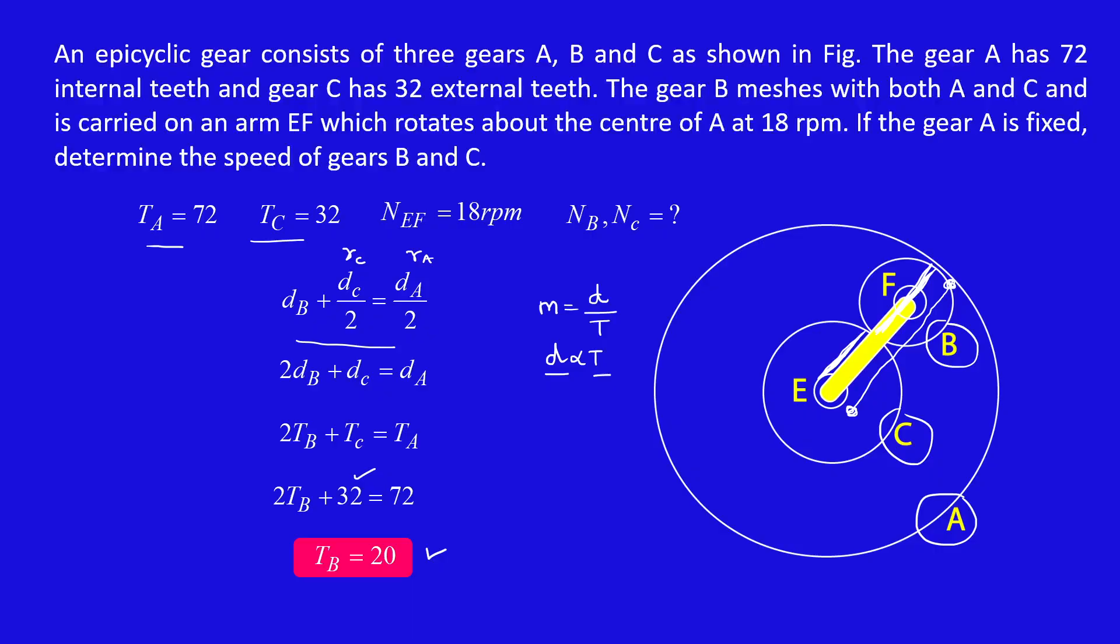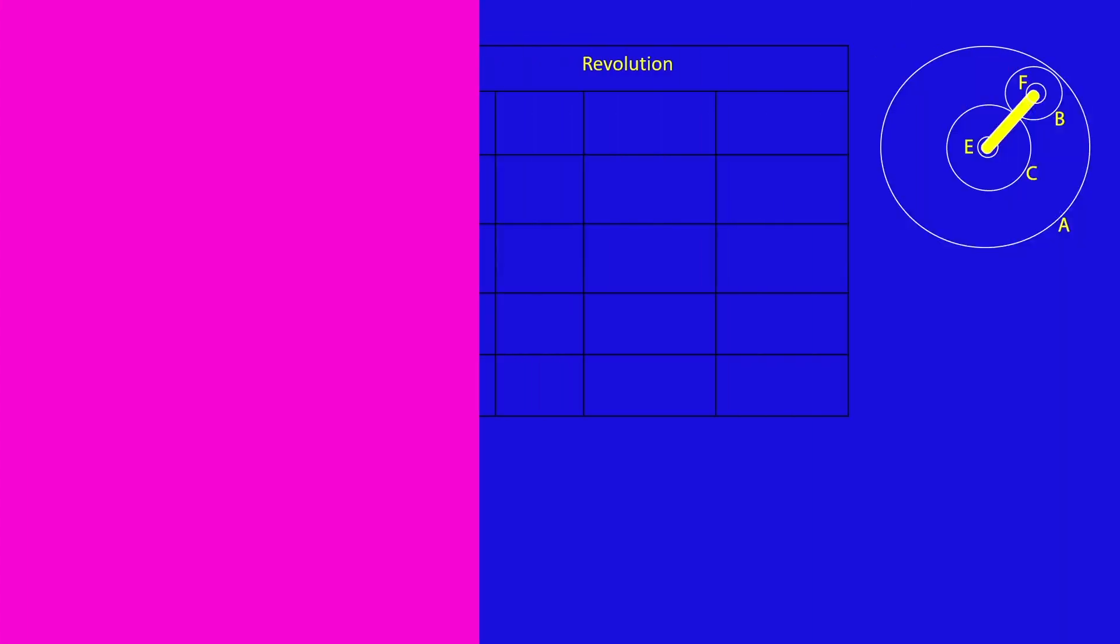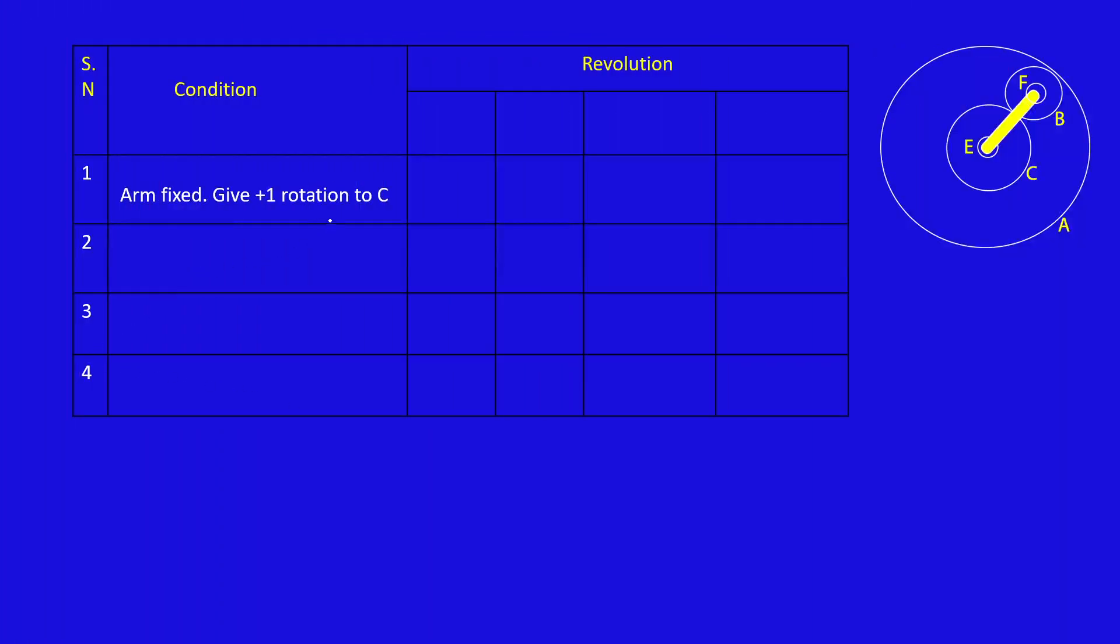Now I am going to use a table to find the speed of gear B and C. First row arm fixed, we are giving plus 1 rotation to gear C. Next row arm fixed, we are giving plus X rotation to C, which is simply multiplying row 1 by X. We are adding plus Y revolution to all the columns. Then finally total.